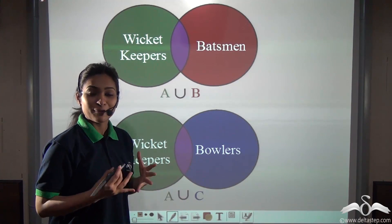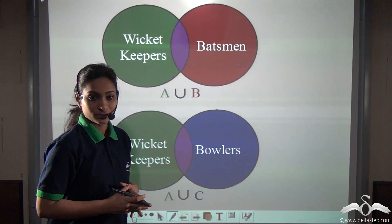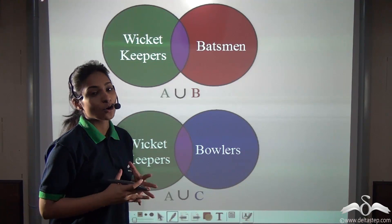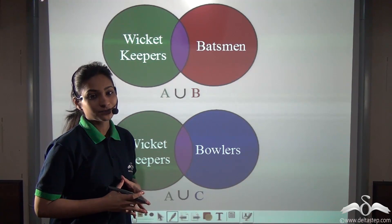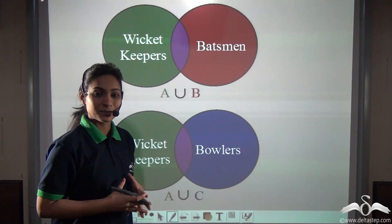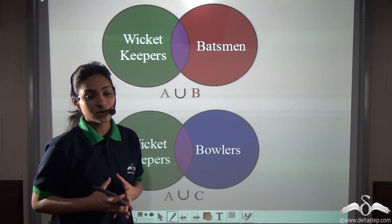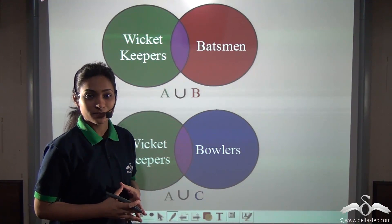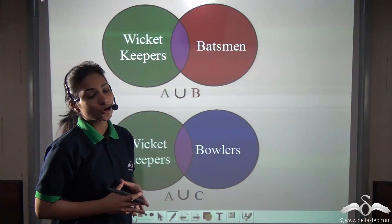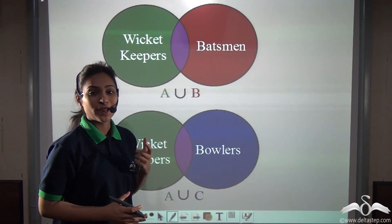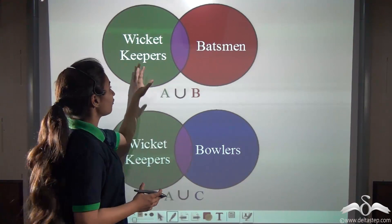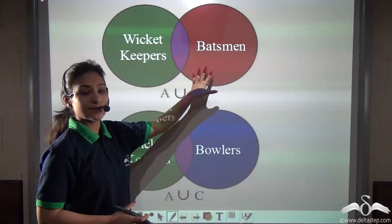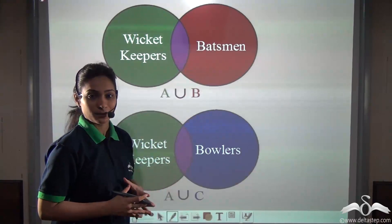Suppose you are making an IPL team. What do you require? Some batsmen, bowlers, wicket keepers. So what do you do? You make a team of wicket keepers and batsmen.